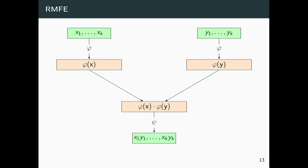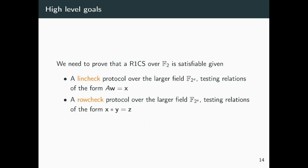The map ψ essentially allows us to recover the bits, meaning that we can perform entrywise multiplication only having access to larger field elements, which is something we want to do, because the Lincheck and the Rowcheck we have can only operate over larger field elements.